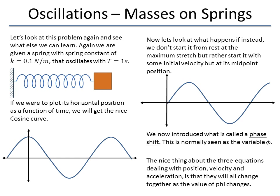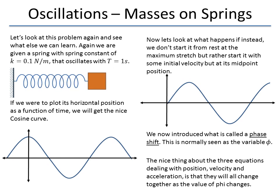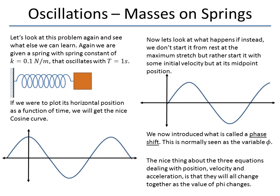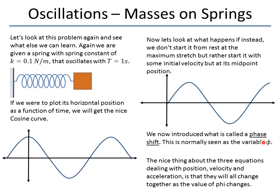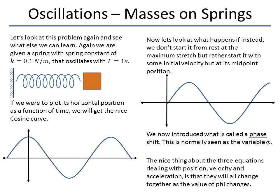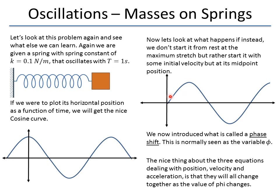This is also another reason why we haven't seen any sine functions. Even though sine functions obey the same property, the sine and cosine functions are related — if you remember from mathematics — by a pi over 2 phase shift. So we could put in that pi over 2 phase shift, and we turn the cosine into a sine function.